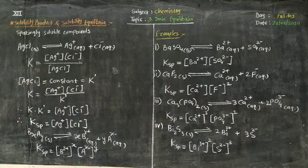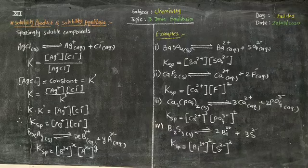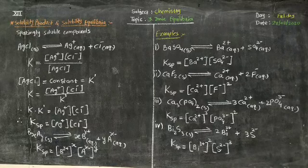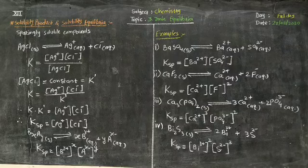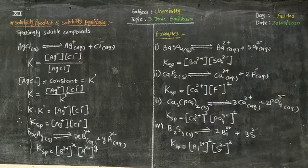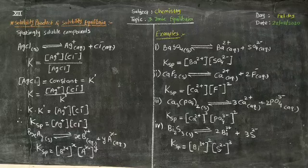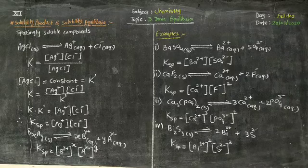Again, the definition of solubility product: In the saturated solution of a sparingly soluble salt, the product of equilibrium concentrations of the constituent ions raised to the power equal to their respective coefficients in the balanced equilibrium expression at a given temperature is called solubility product. The next article is the relationship between solubility and solubility product.